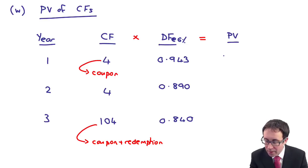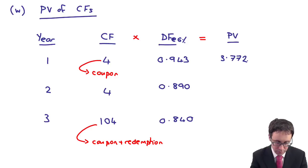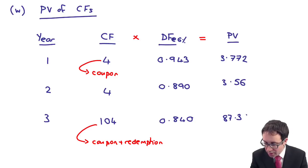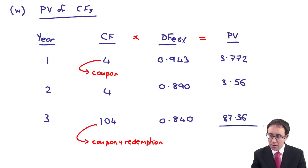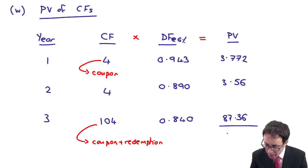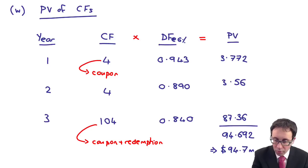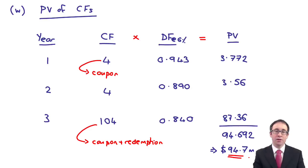When we total up those present values — 3.772, 3.56, and 87.36 — we get 94.692, which is approximately 94.7 million dollars. That is the starting value of our financial liability.